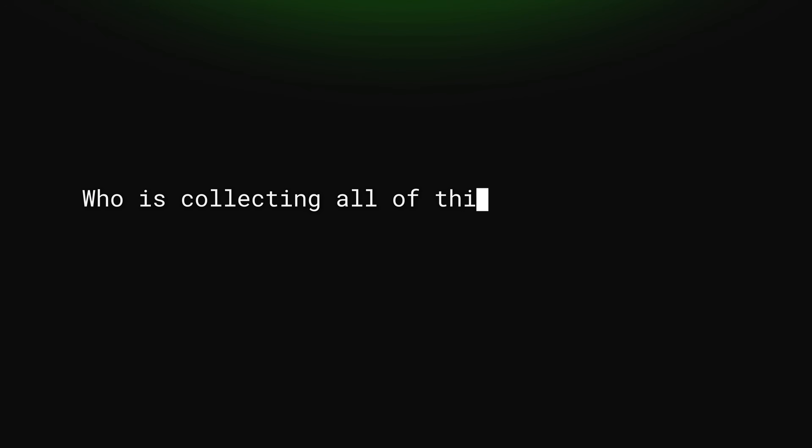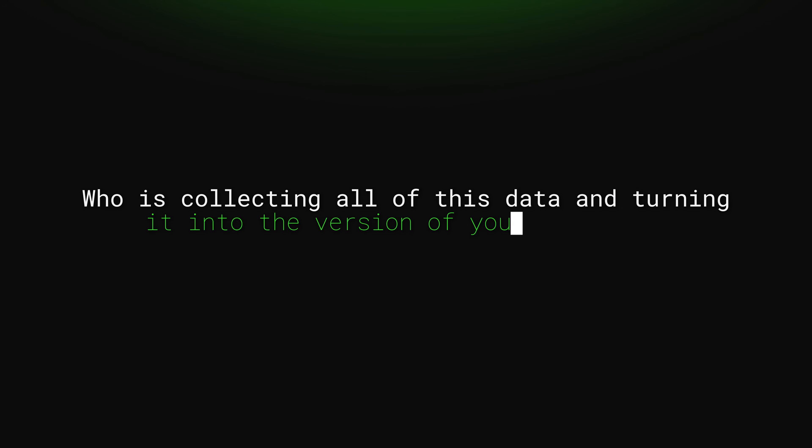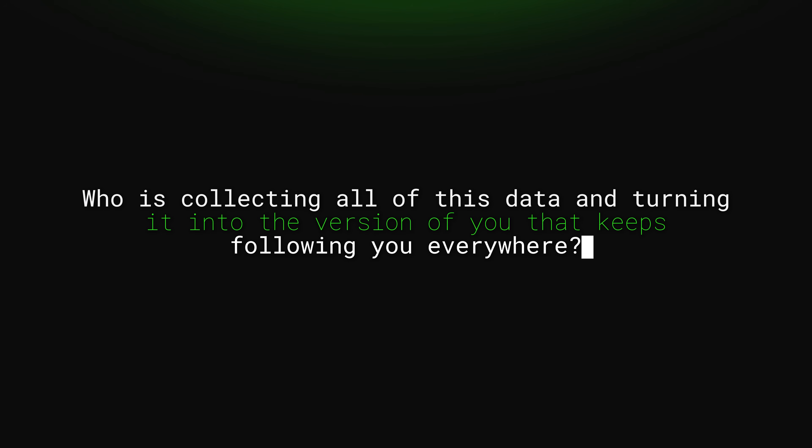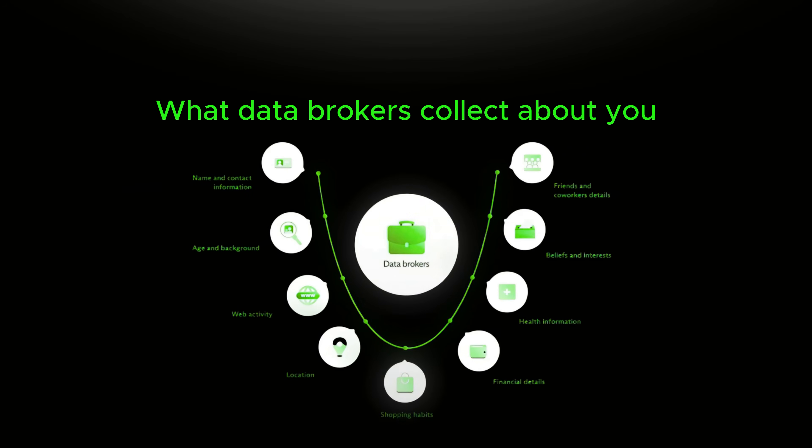Who is collecting all of this data and turning it into the version of you that keeps following you everywhere? If you've ever felt like the internet knows too much about you, you're not imagining it — and the reason is data brokers. Data brokers are the hidden marketplace of human behavior. They buy, merge, repackage, and sell data on you at a scale that feels unreal. They don't just keep a file on you — they keep dozens, each file tens of thousands of data points deep.